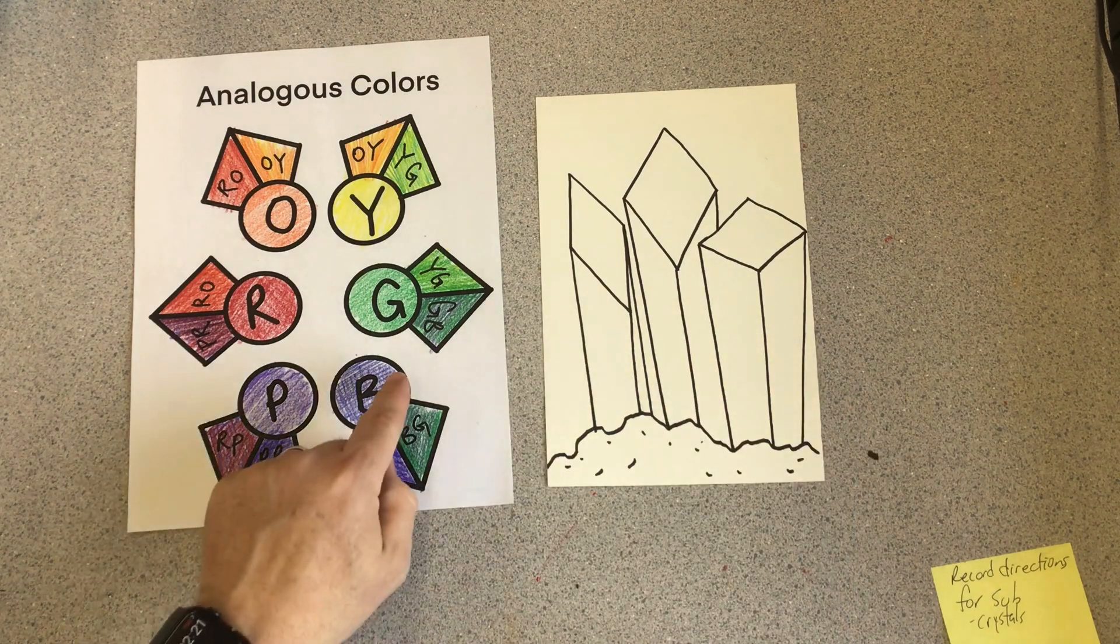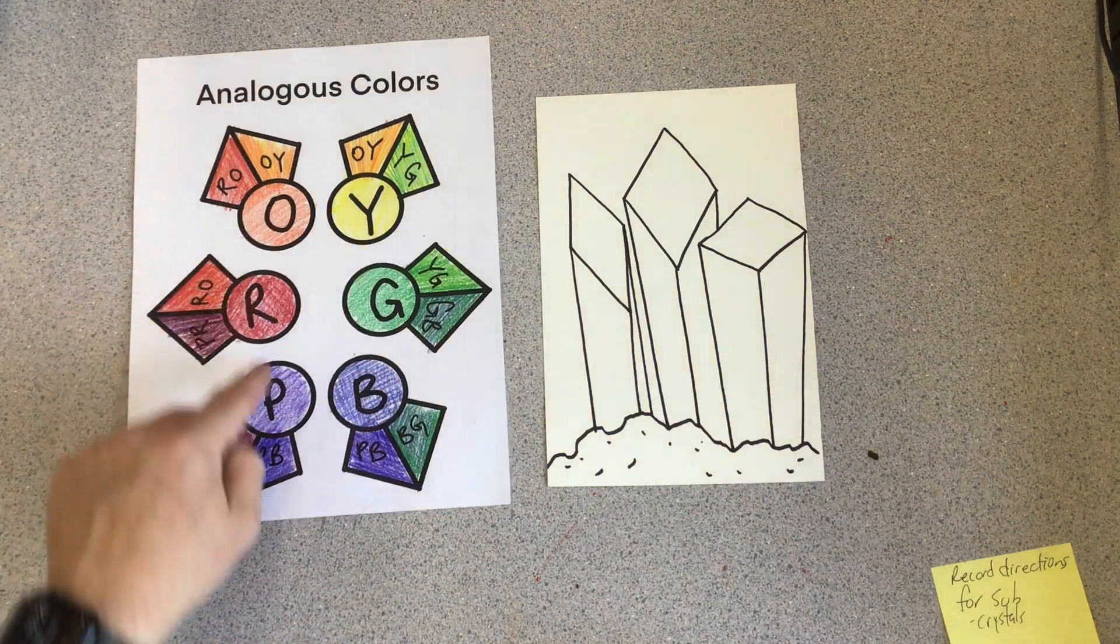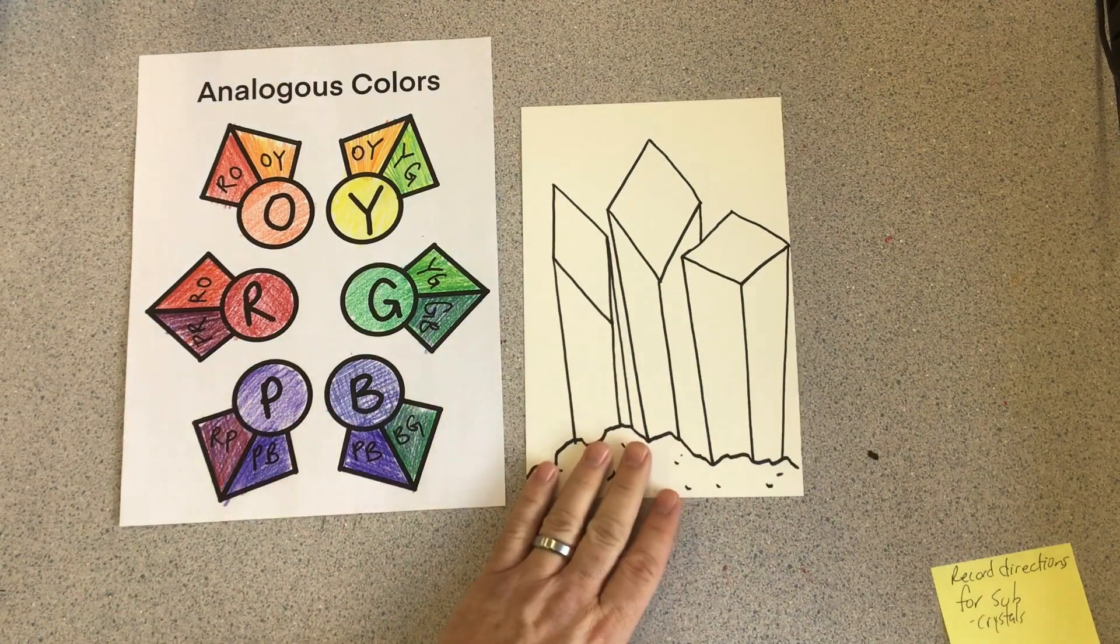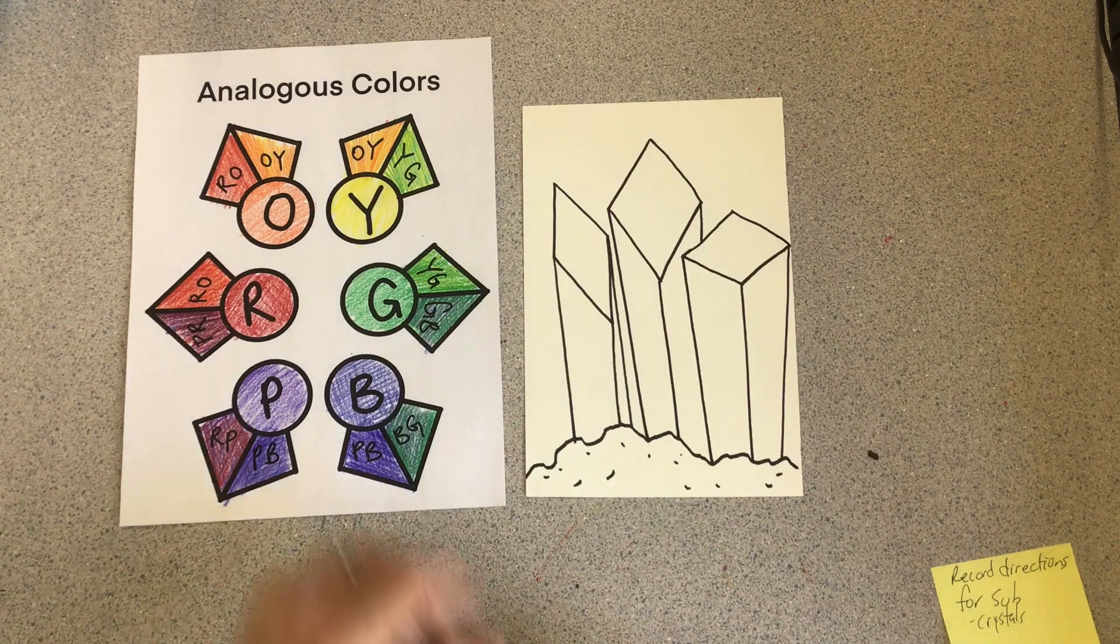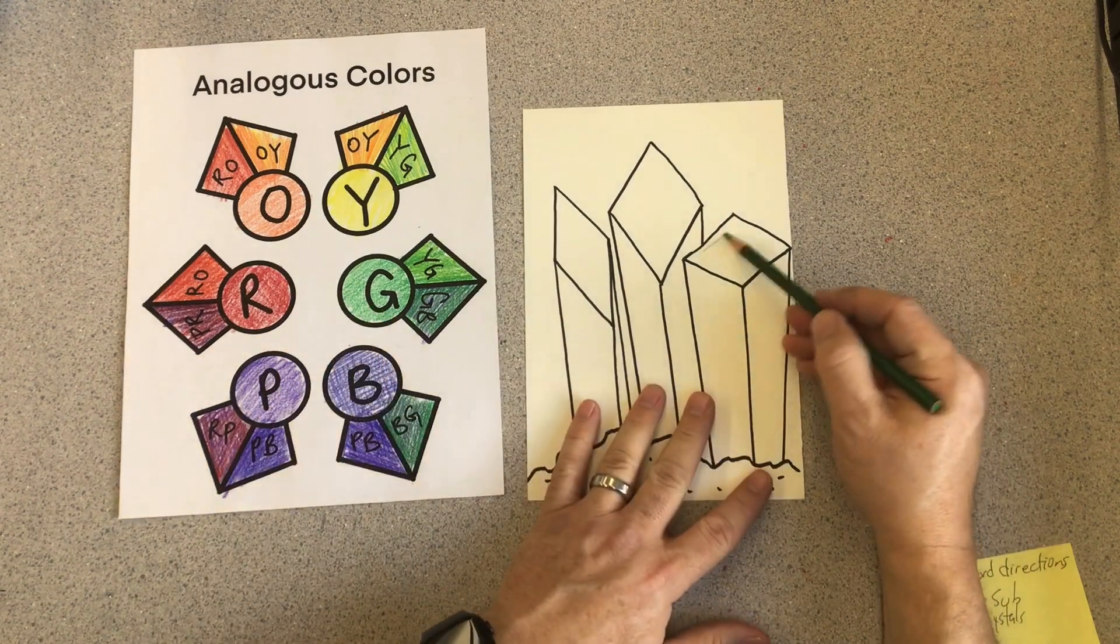Once you have them drawn, you're going to pick three of the colors from your worksheet to color in your geodes. For instance, if I want this one to be green, looking at my worksheet, I'm going to start with just green at the top.